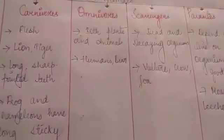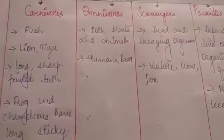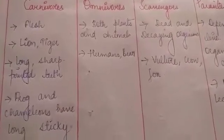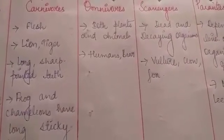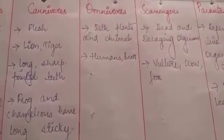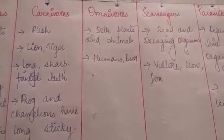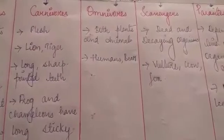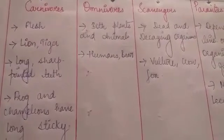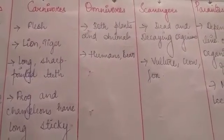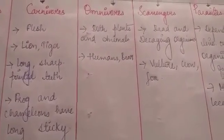Next is omnivores. 'Omni' means both or all, so omnivores are organisms which eat both plants and animals. The best example is humans.